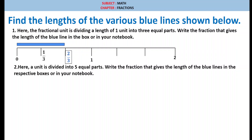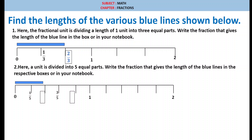Second one. Here, a unit is divided into 5 equal parts. Write the fraction that gives the length of the blue lines in the respective boxes or in your notebook. If we observe, 0 to 1 is divided into 5 equal parts. The first one is 1 by 5, next the blue line represents 2 by 5, then the next one is 3 by 5, and the next blue line will represent 4 by 5.